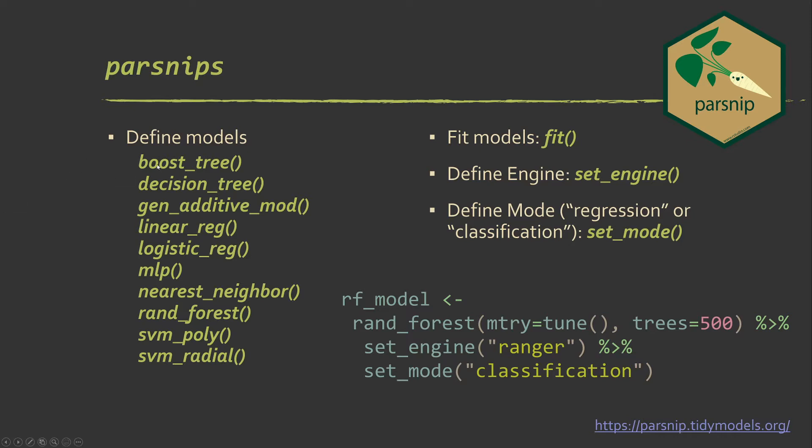So there are functions for setting up boosted decision trees, decision trees, GAMs, generalized additive models. There's logistic and linear regression. MLP is multiple-layer perceptron. That's effectively artificial neural networks. KNNs, random forests, and then different SVMs with different kernels, so radial basis, polynomial.